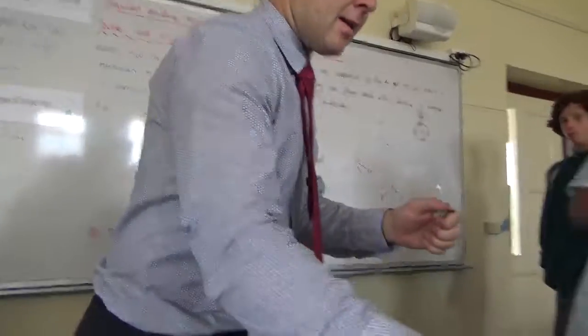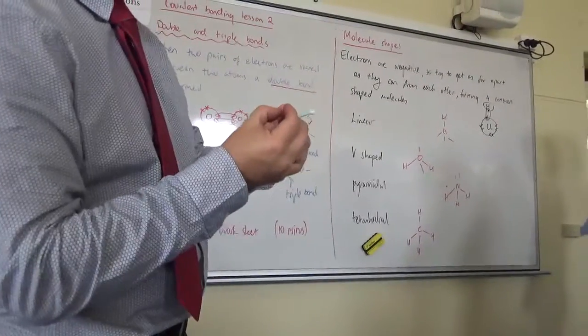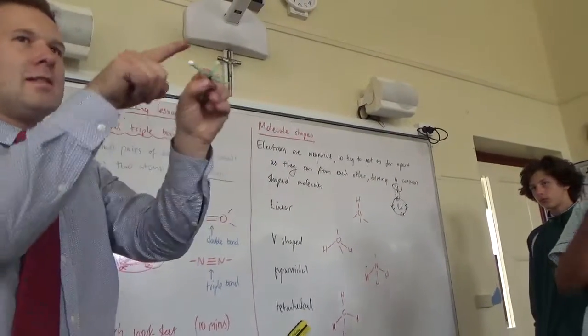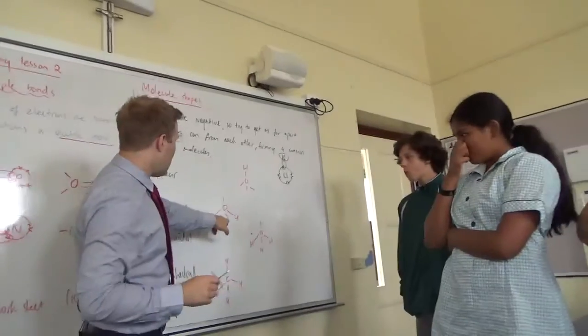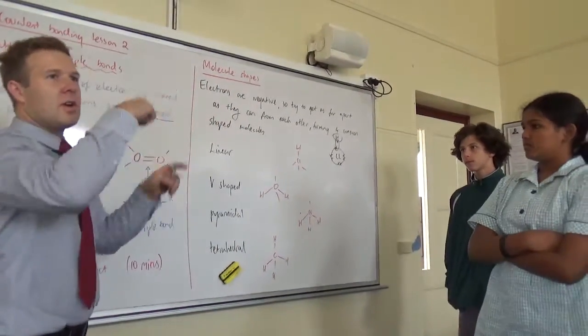If you add another atom to it, like this, it forms a V shape. You can see the V between the black and the two whites. So, that's the shape that water molecules have. And that's why when I've drawn them you'll see I don't draw them straight, I draw a little V.